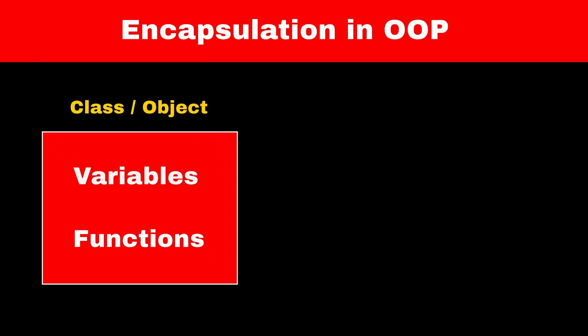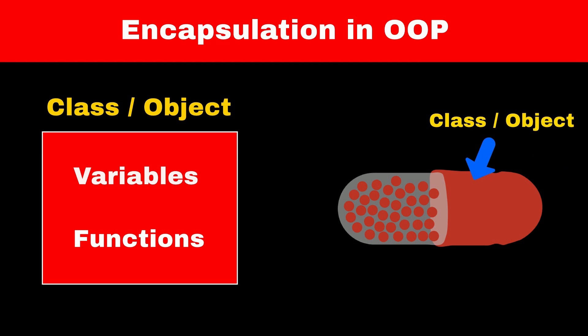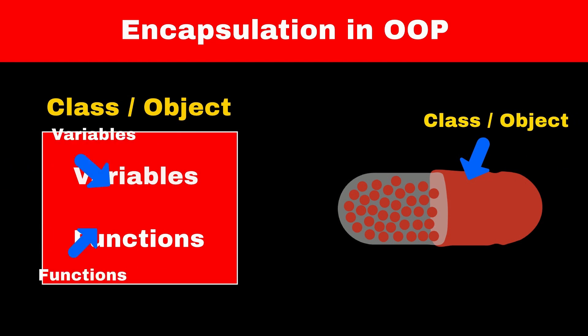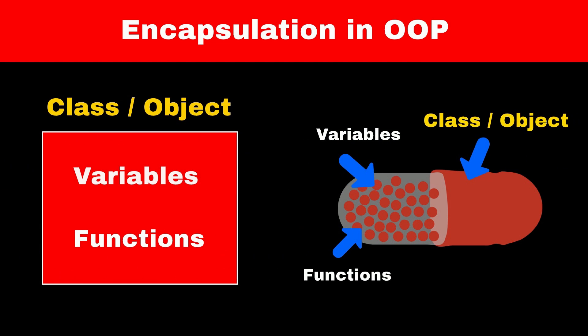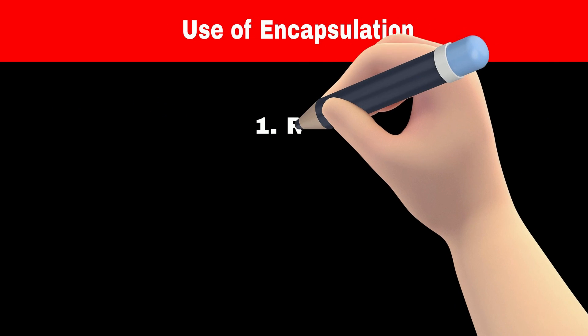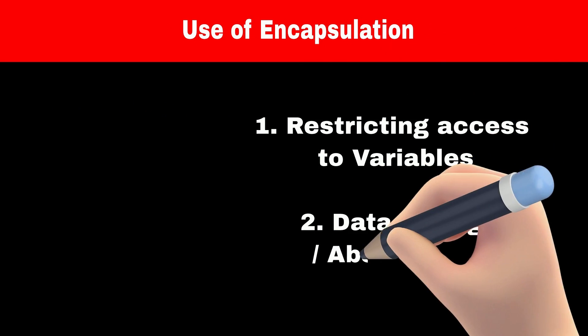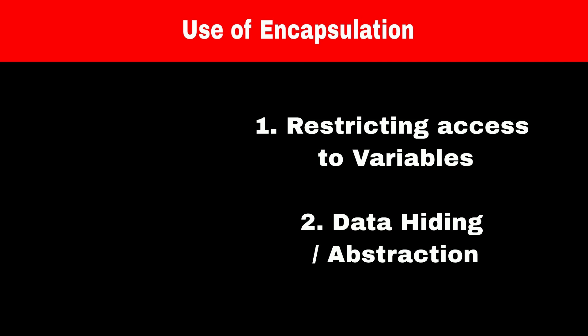Similarly in object oriented programming, variables and functions are wrapped into classes and objects. You can consider the class as an outer container that protects variables and functions from any outside unauthorized access. Wrapping of variables and functions into a single unit like a class is called encapsulation in OOP. Encapsulation is used for restricting access to variables and functions and it is also used for data hiding.